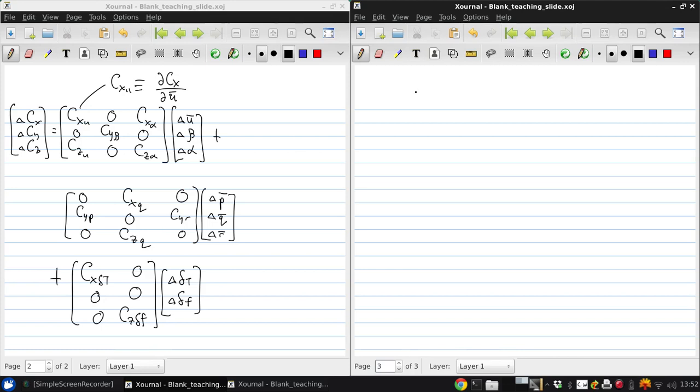For the moments, we can write down something similar for delta Cl, delta Cm, delta Cn with Cm alpha times delta U bar, delta beta, delta alpha, plus